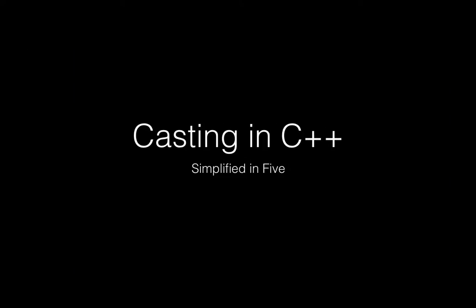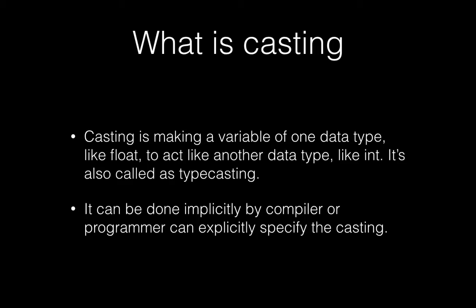Hello everybody, welcome to Simplified in 5. Today we are going to talk about casting in C++. Casting is basically making a variable of one data type act like another data type — for example, making a float variable act like an integer variable. It is also called type casting.